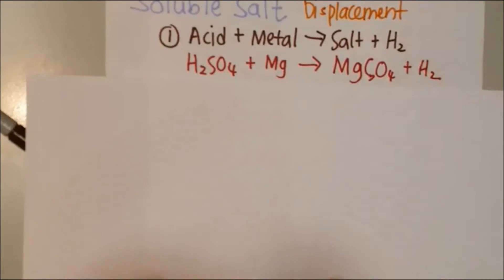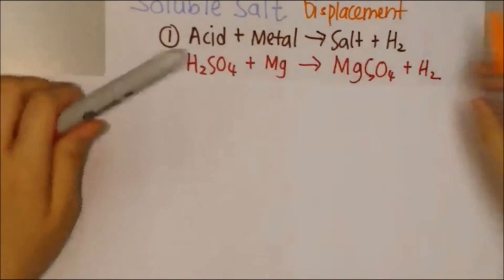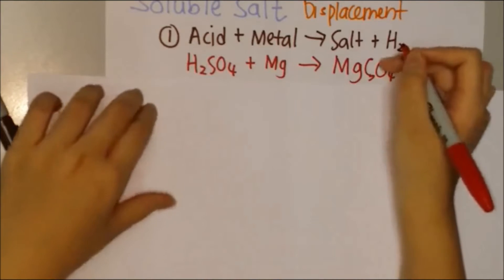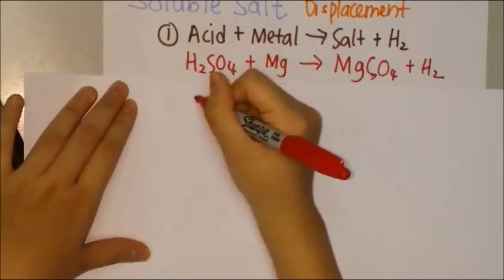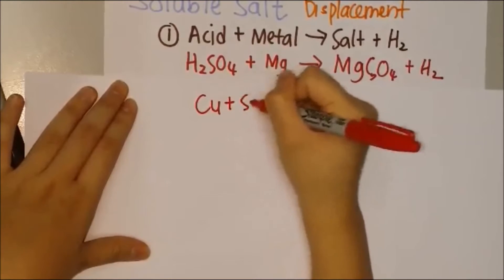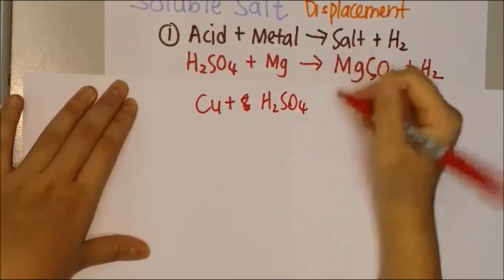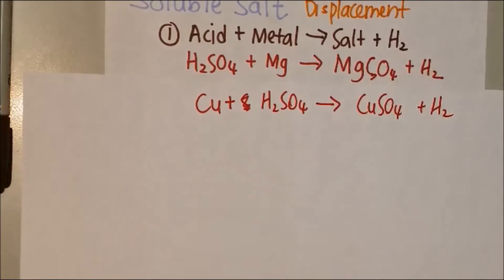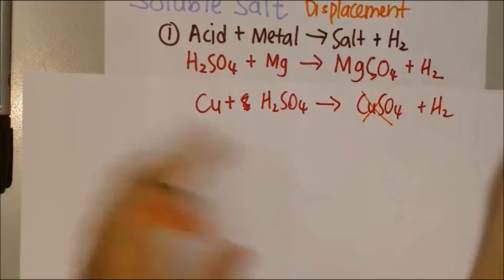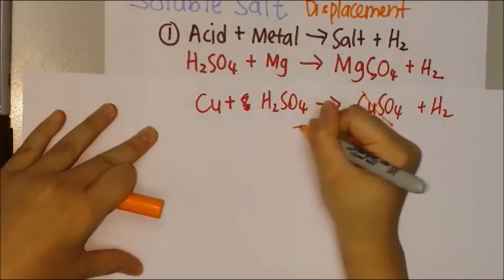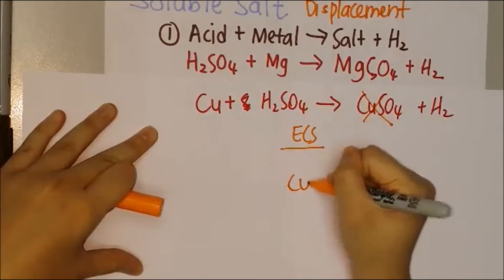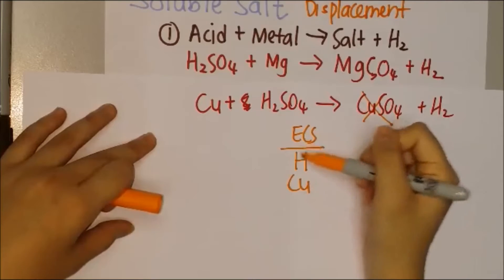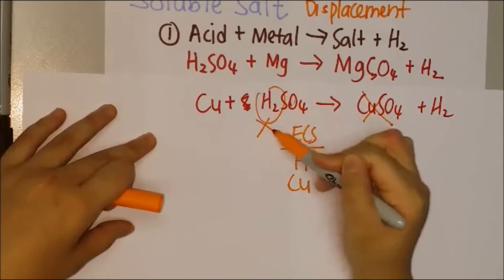You need to be careful when using this reaction. For example, you cannot prepare copper sulfate by using a displacement reaction. When copper reacts with sulfuric acid, copper sulfate will not form, because copper is less electropositive than hydrogen in the electrochemical series — therefore copper cannot displace hydrogen ions in sulfuric acid.